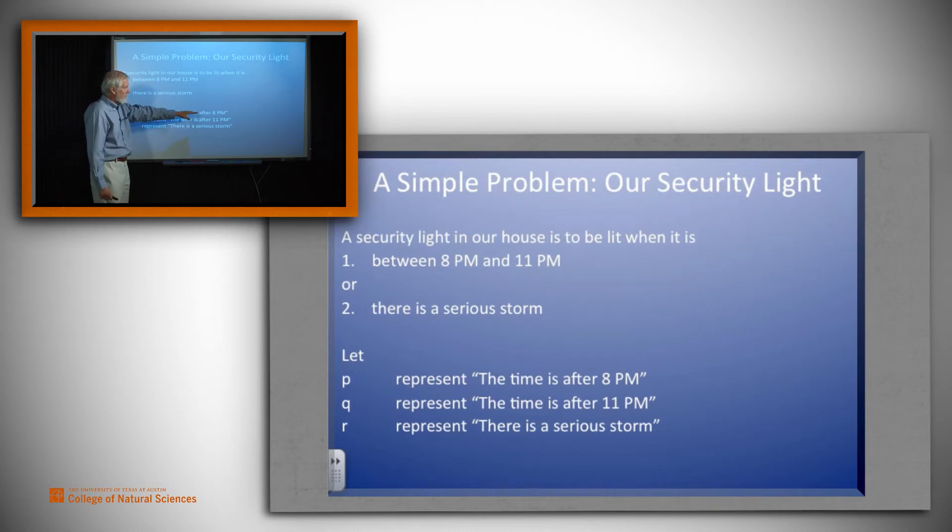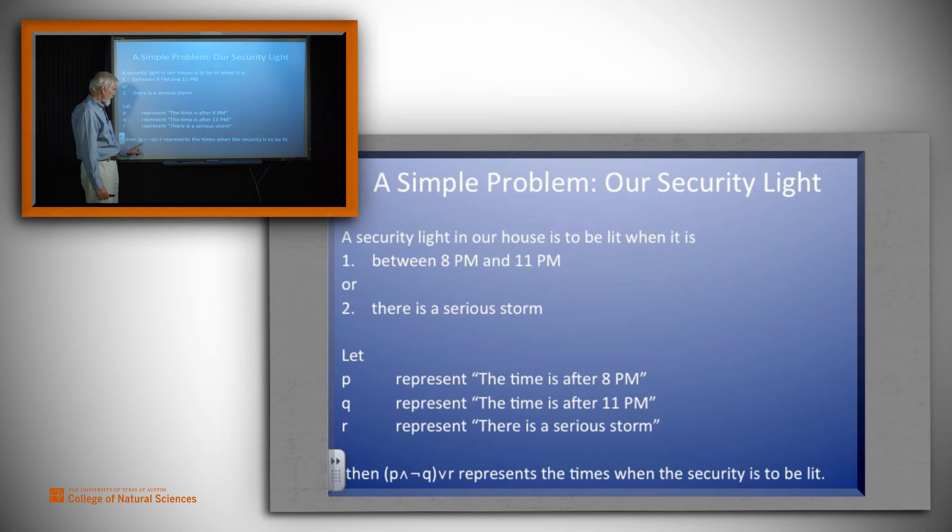Stare at it for a second. We see that we do want the time to be after 8 p.m. but we don't want the time to be after 11 p.m. Remember we want it to be between 8 p.m. and 11 p.m. So we want this to be true, this to be false, and finally we would allow a serious storm also to trigger the light. So the expression P and not Q or R represents the exact times when we want the light to be lit. But how do we build that into our logic?